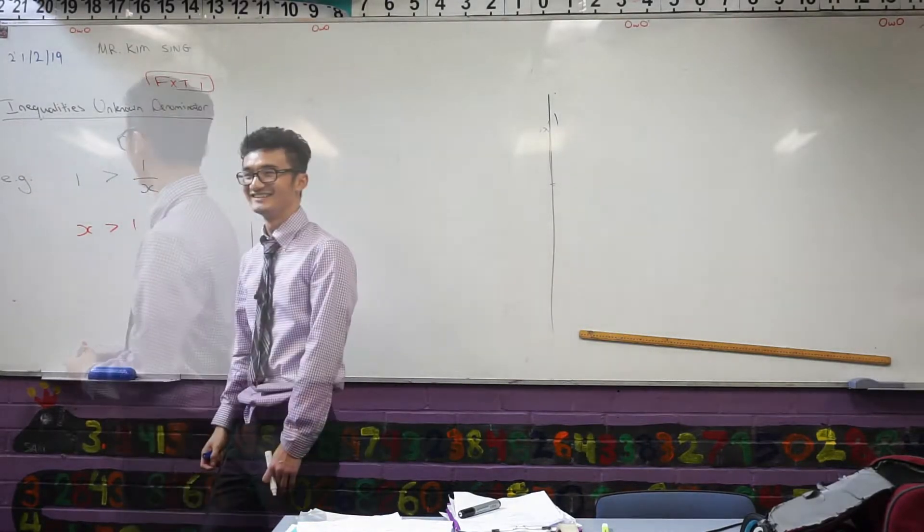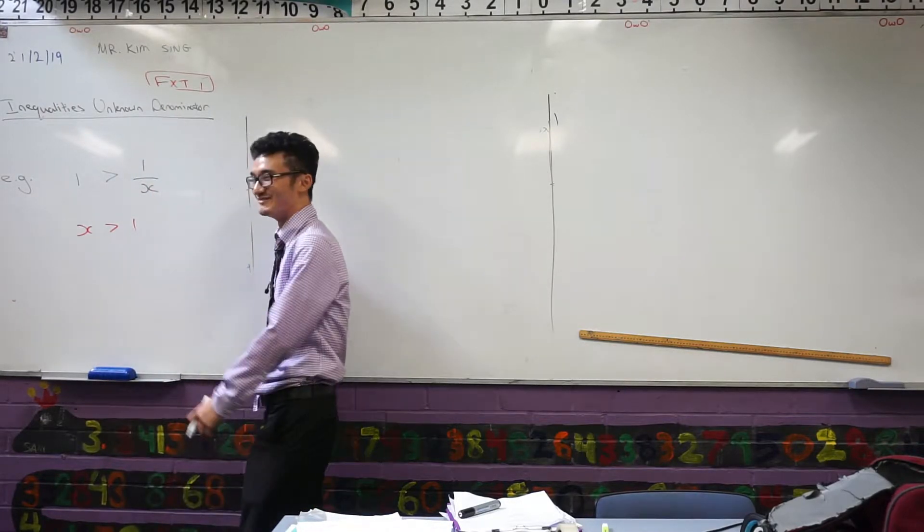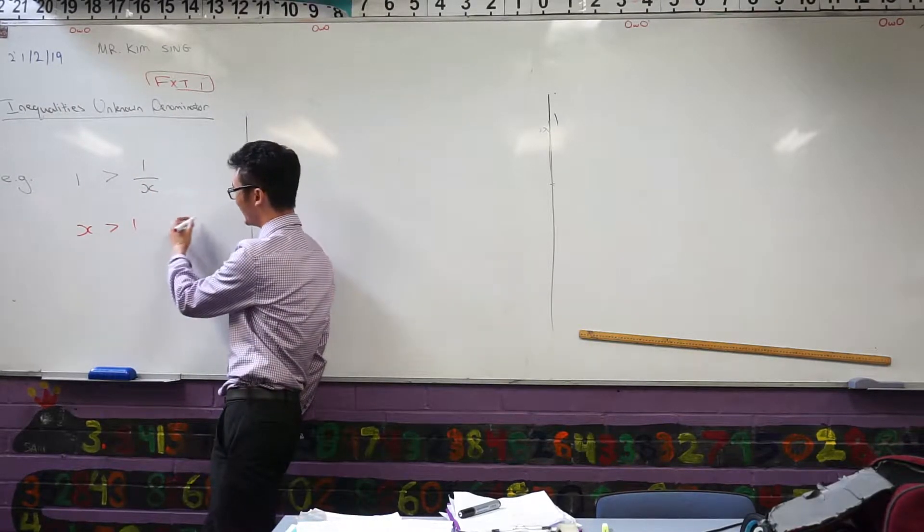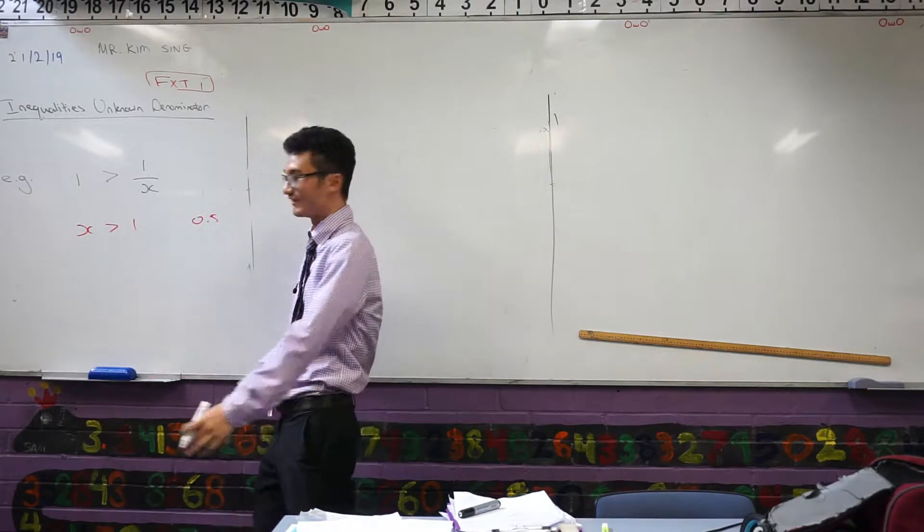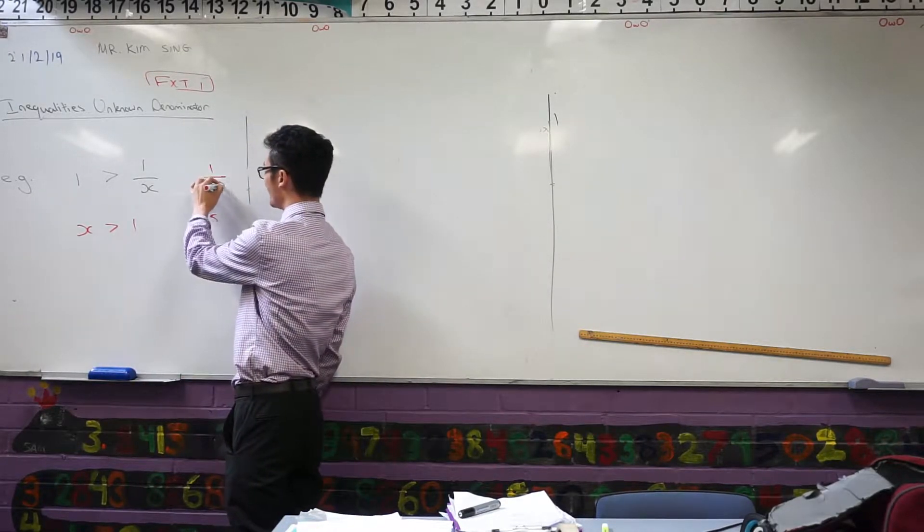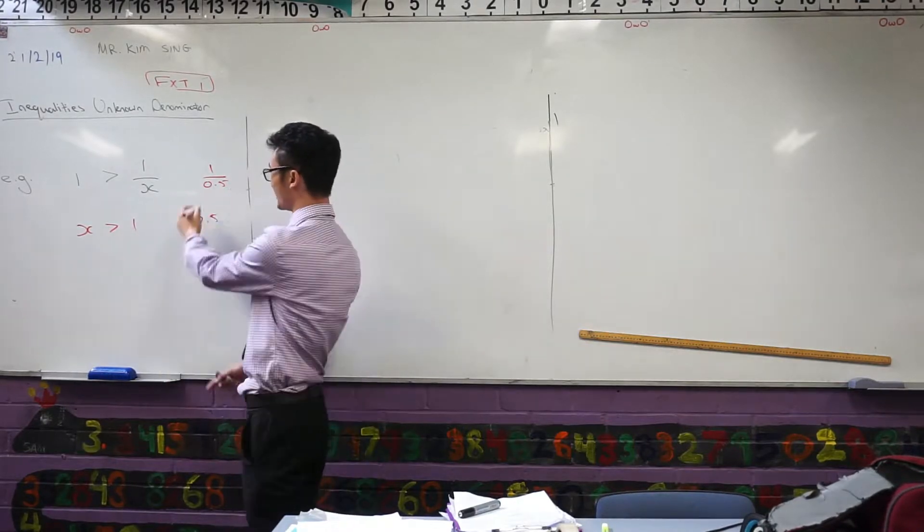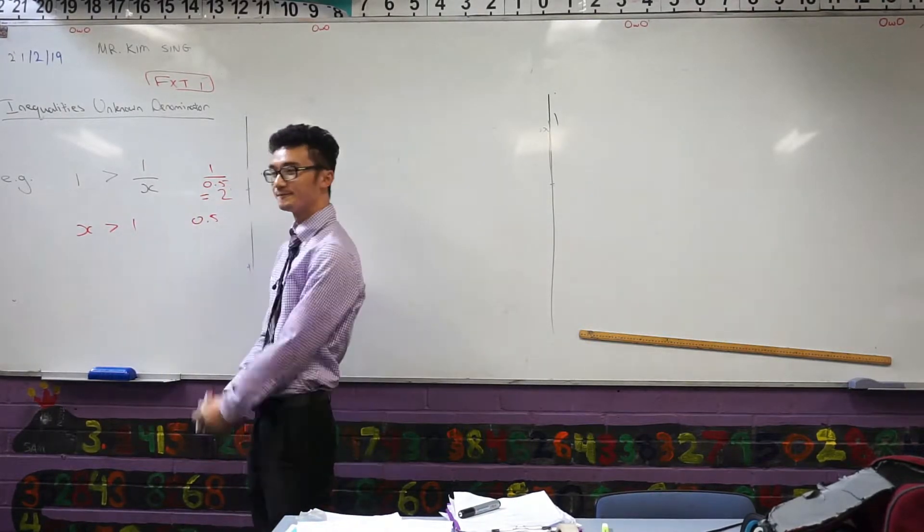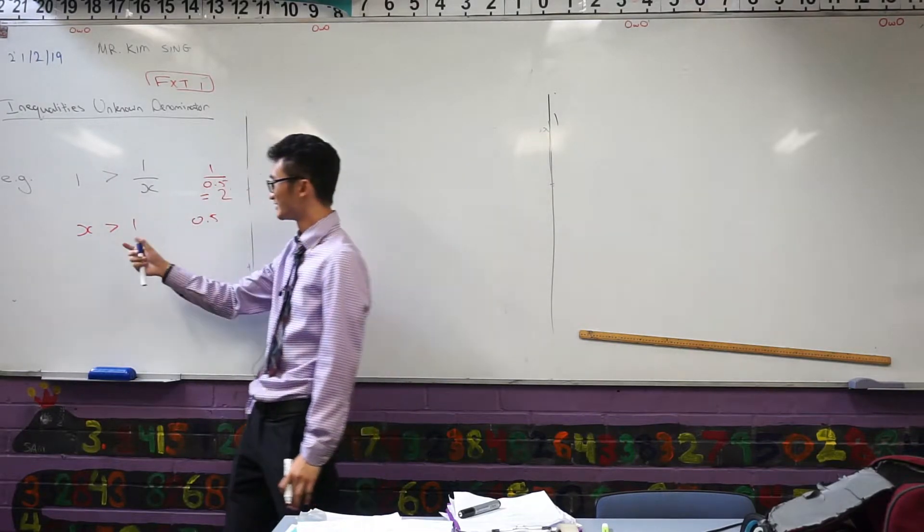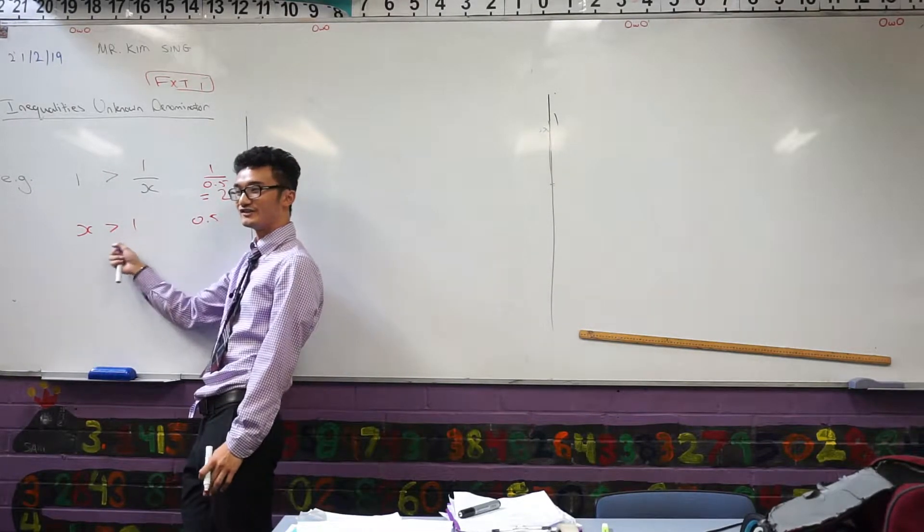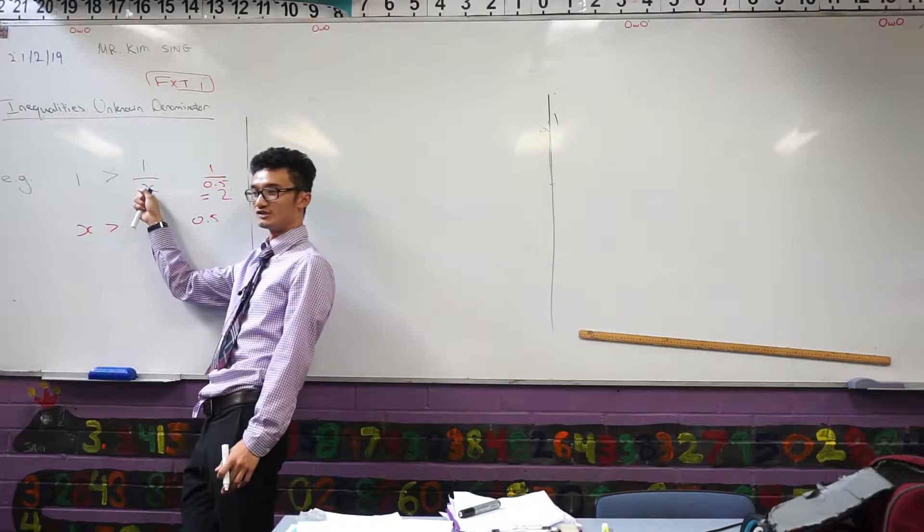0.5. Try putting 0.5. What's 1 over 0.5? Put in your calculator. It's 2. So, Matt asked this. What about 0.5? 0.5 is outside of this, right? So it shouldn't work. And if I put in 1 over 0.5, you said that becomes 2. And that doesn't satisfy that. So that's fine. That makes sense, right? Because that is outside of this x value, and it's not a solution to this. So I'm happy with that.